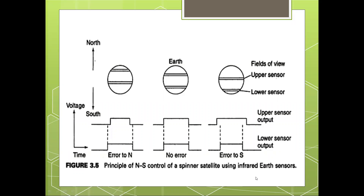The conclusion from this slide is that it shows a typical control system loop. The control system will be more complex for a 3-axis stabilized satellite, employing an onboard computer to process sensor data and command the gas jets and momentum wheels. These methods are employed in the attitude and control system.